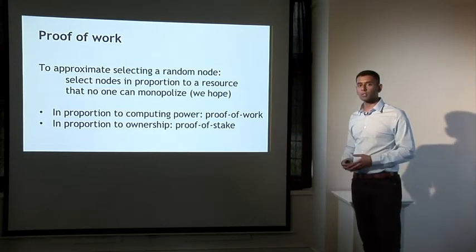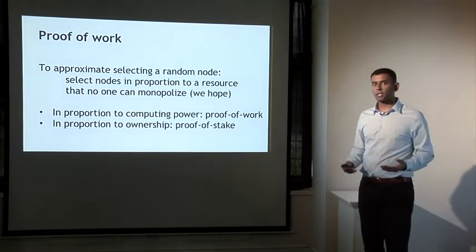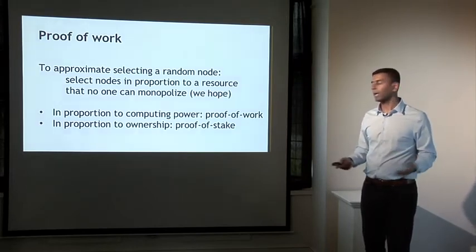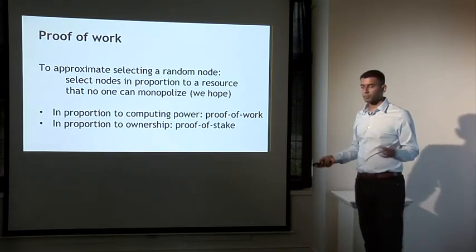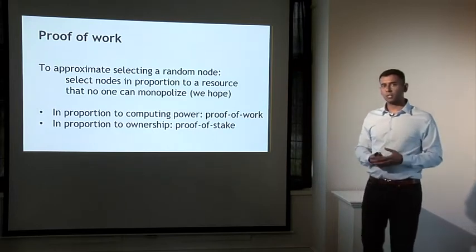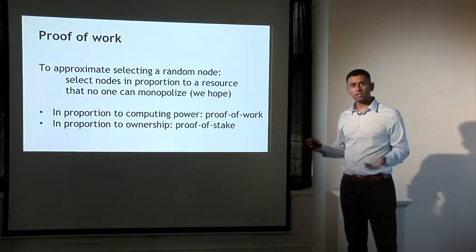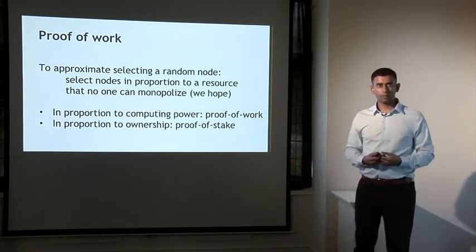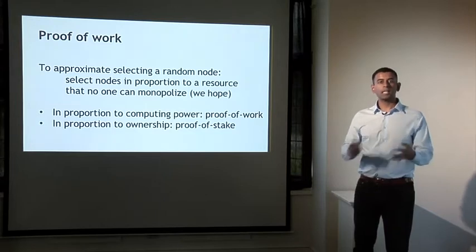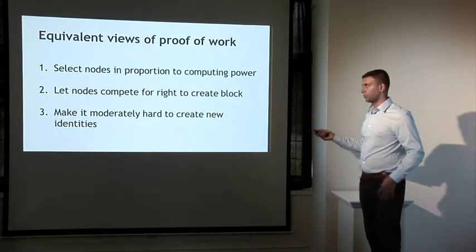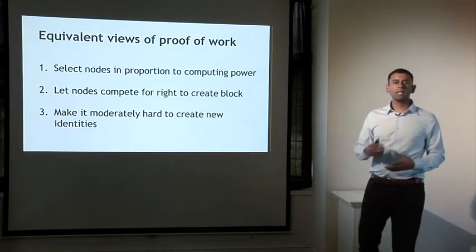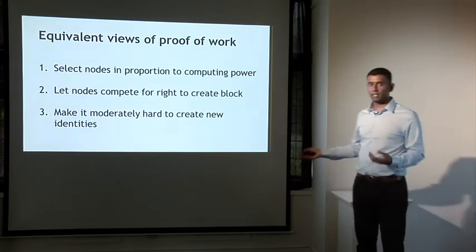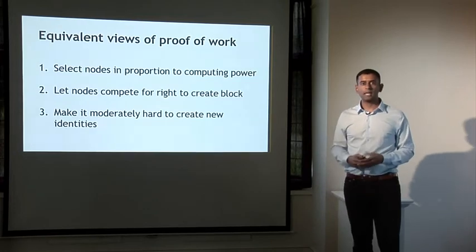Alternatively, it could be in proportion to ownership of the currency — this is called proof of stake, which we'll see in a later lecture. But let's come back to proof of work. Another way to understand this is that we're allowing nodes to compete with each other using their computing power, and that will result in nodes automatically being picked in that proportion. You can also think of it as making it moderately hard through proof of work to create new identities, which is sort of an attack on the Sybil attack. Let me now show you the exact proof of work system used in Bitcoin — hash puzzles.